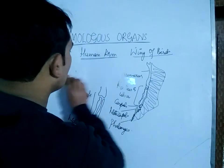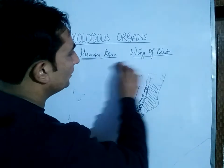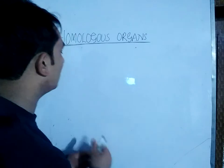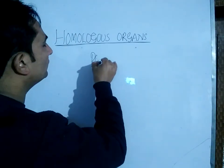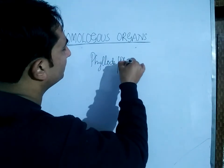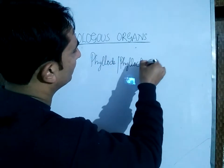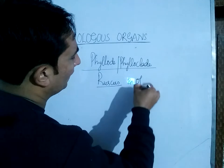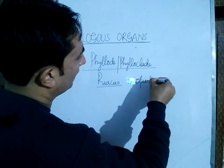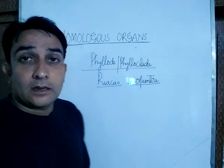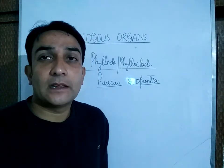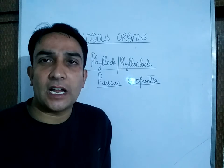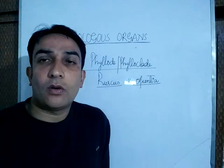There are also examples of homologous organs in plants. In the case of plants, you will see the phyllode or phylloclade of Ruscus and Opuntia. We say that the phyllode of Ruscus and Opuntia is what we call homologous organs.